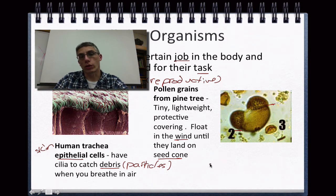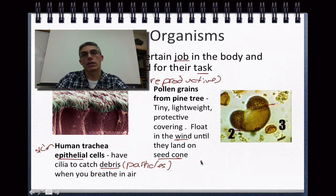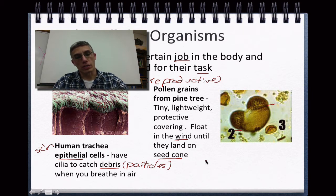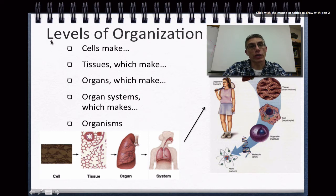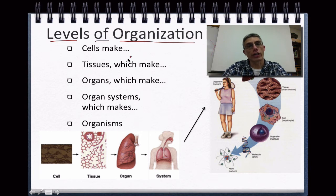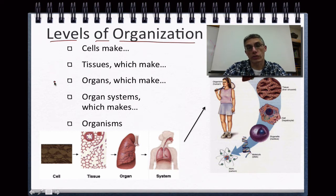In multicellular organisms we have specialized cells with specialized tasks, but they need to be able to work together to maintain stability, or homeostasis. Because of this specialization, it allows us to create hierarchical levels of organization. When you think about the word hierarchy, you're talking about an order to things — in this case, the order of cells, tissues, organs, organ systems, and how they are used to make up the organism itself.